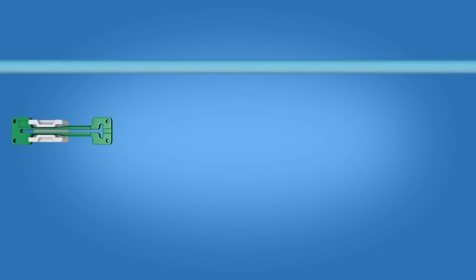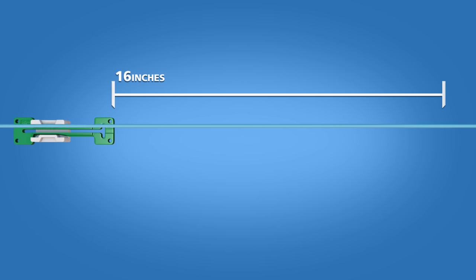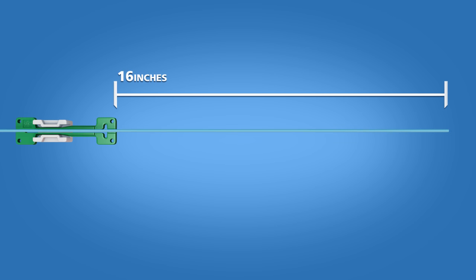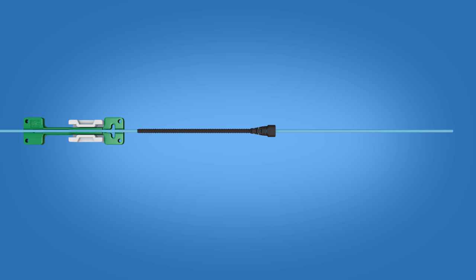Clamp the 3mm cord clamp approximately 16 inches from the end of the 3mm cord jacket. This will prevent the fibers from pistoning. Insert the cordage through the cord tube and boot.